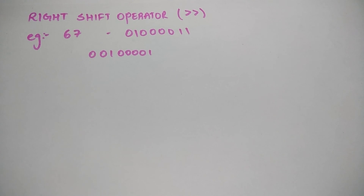Left shift actually multiplies the number by 2, so 67 multiplied by 2 is 134 — and the binary shown in the left shift result is 134. In the right shift, the number 67 is divided by 2, giving 33.5. Since fractions are not allowed, the output will be 33.